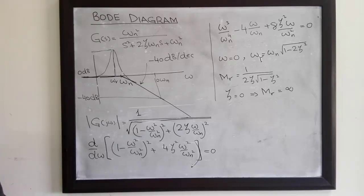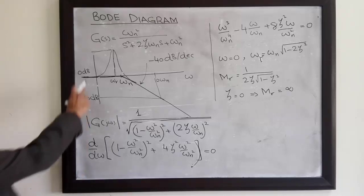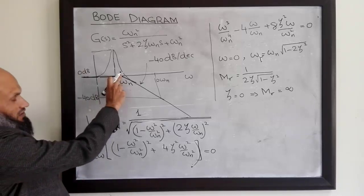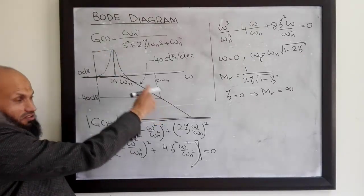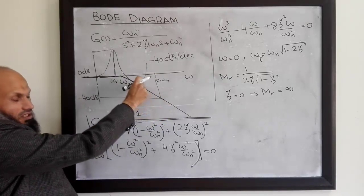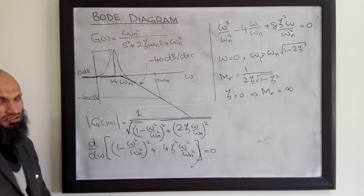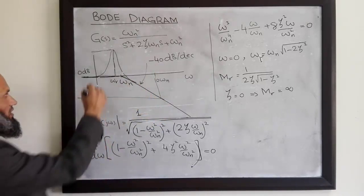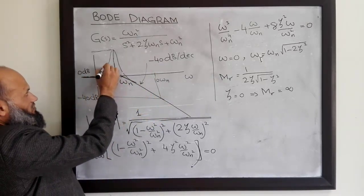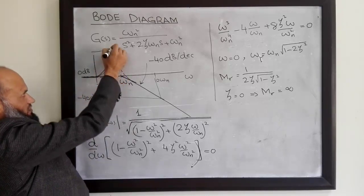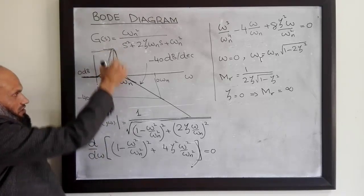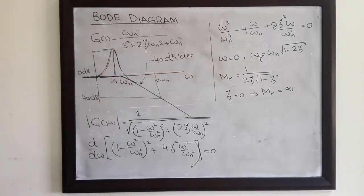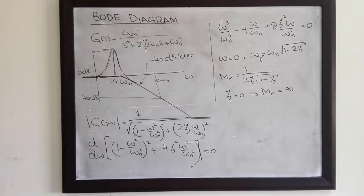In summary, the Bode diagram magnitude plot for a quadratic factor can be easily sketched: at low frequencies it is 0 dB, at high frequencies it drops with a slope of minus 40 dB per decade. We can refine this asymptotic plot by determining the peak value Mr and the resonant frequency ωr corresponding to that peak.